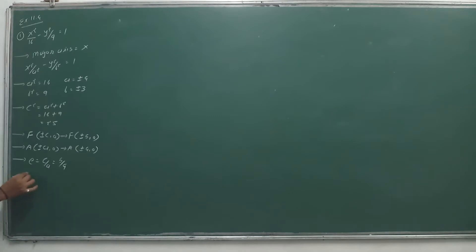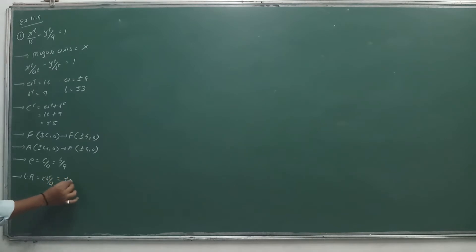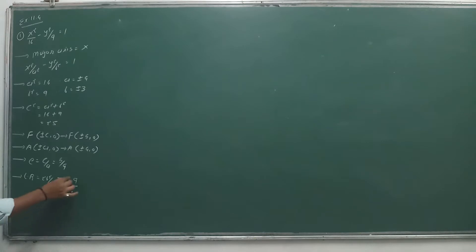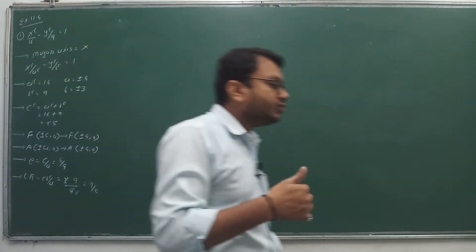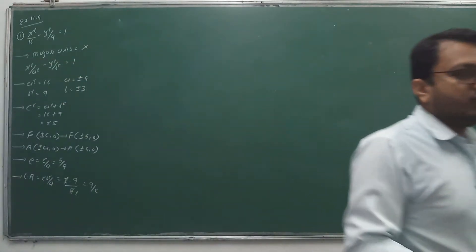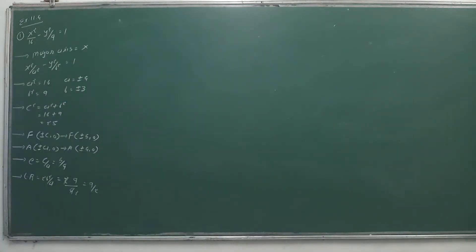Latus rectum LR = 2b²/a. So 2 × 9 divided by 4, answer is 9/2. Completely simple — concentrate on what is asked and carry out the calculation accordingly.